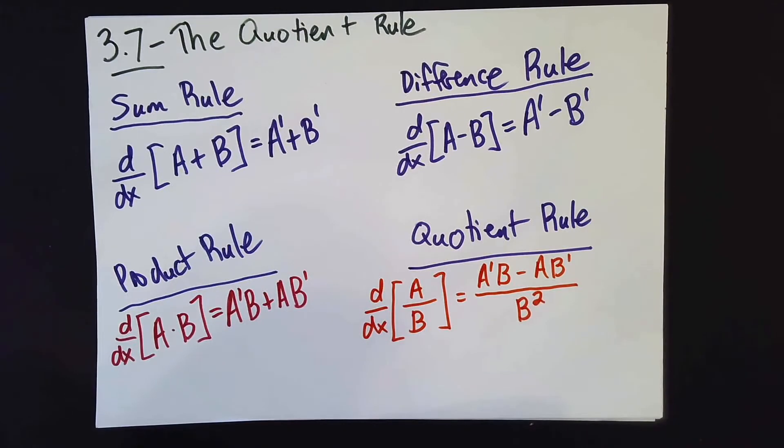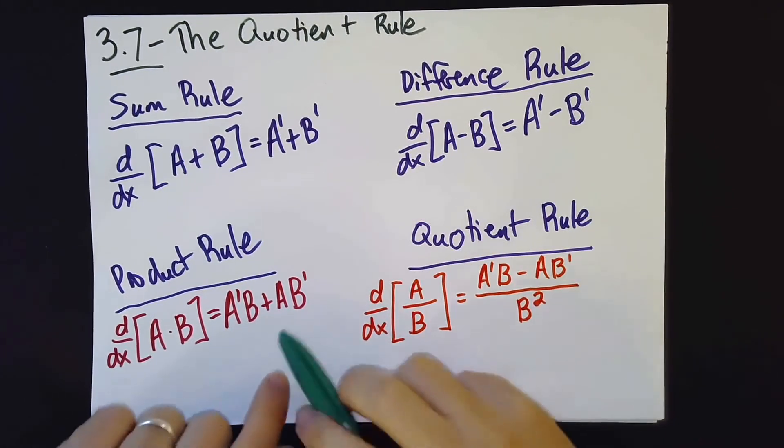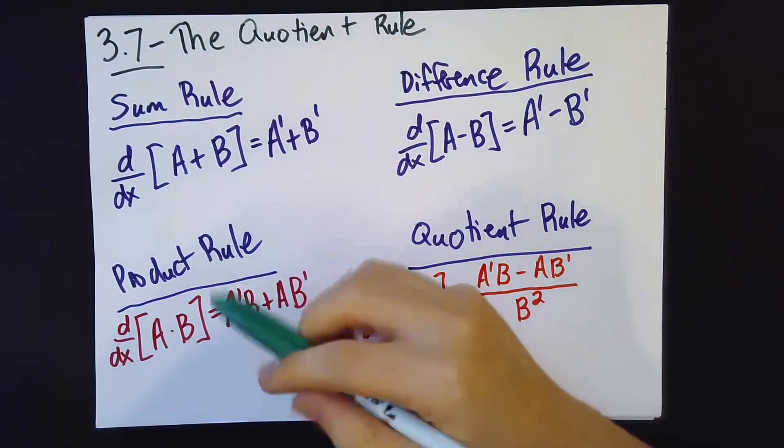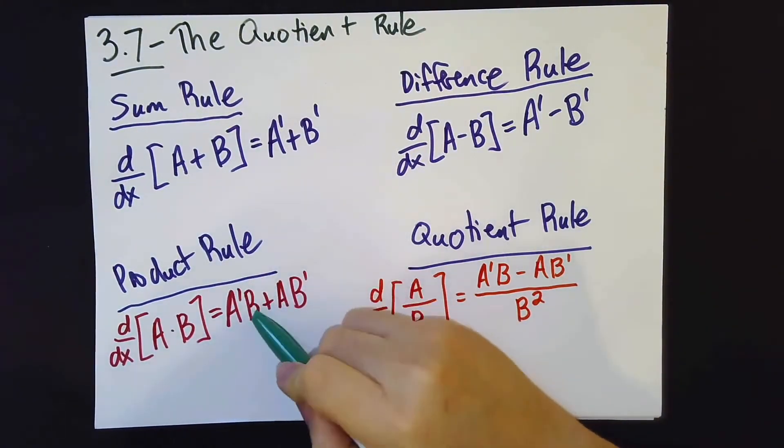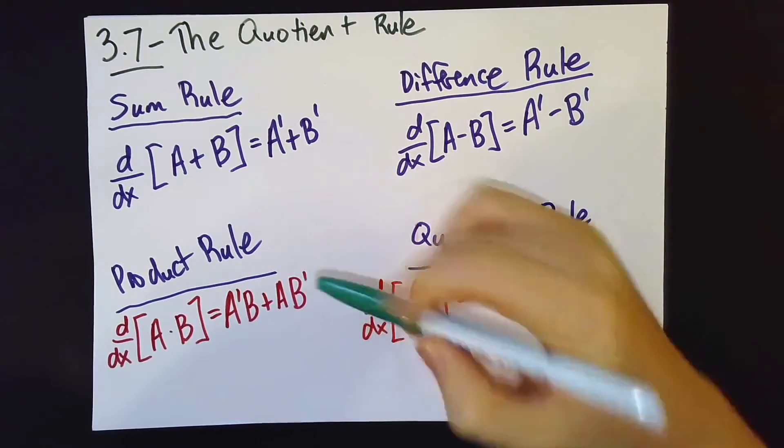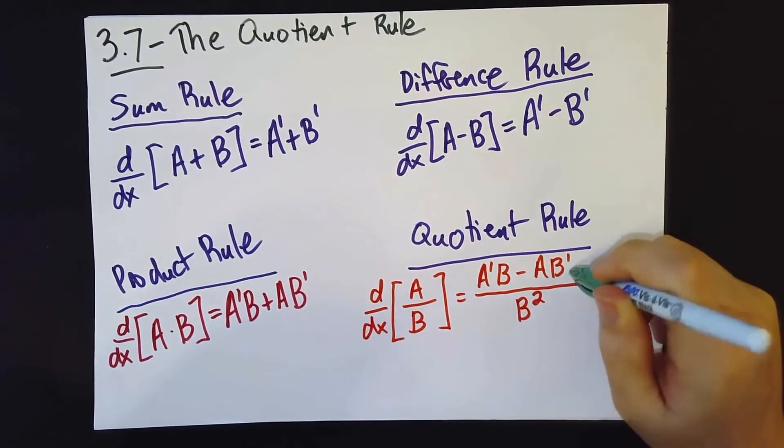I just want to make one note about how this relates to the product rule. Namely, the product rule says take the derivative of a, multiply it by b, and then take a and multiply it by the derivative of b. I have to do both of those things for the quotient rule as well.